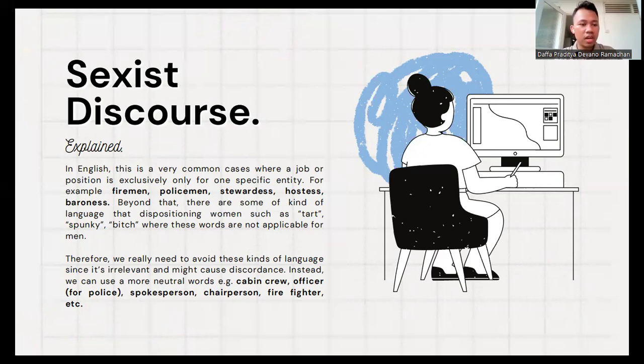Beyond that, there are some kinds of language that disempowers women, such as tart, floozy, bitch, where these words are not applicable for men. Therefore, we really need to avoid this kind of language since it's irrelevant and might cause discordance. Instead, we can use more neutral words, such as cabin crew instead of stewardess or steward, officer for police, spokesperson instead of spokeswoman or spokesman, chairperson instead of chairwoman or chairman, firefighter, etc.